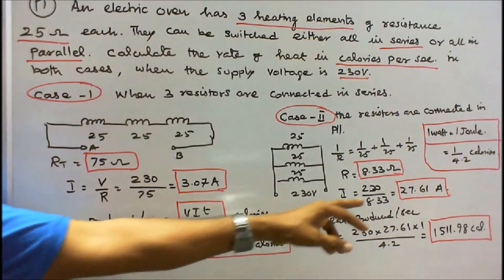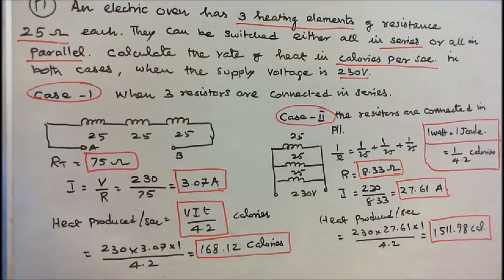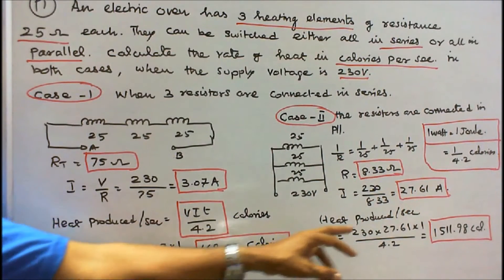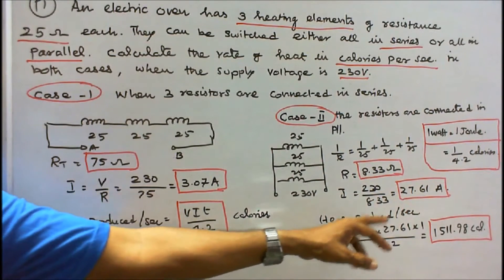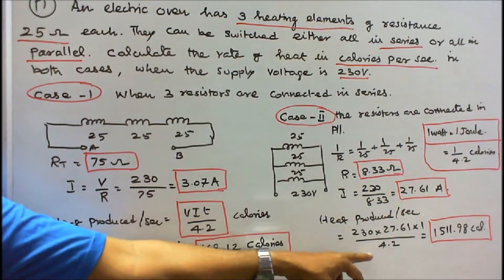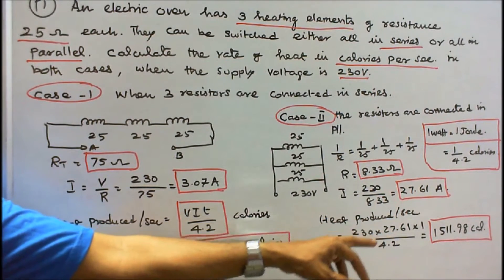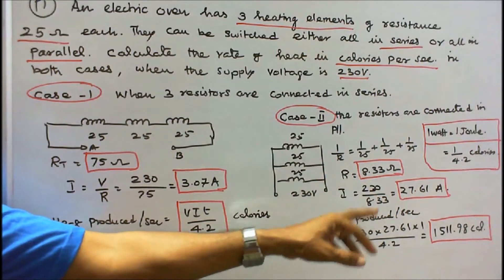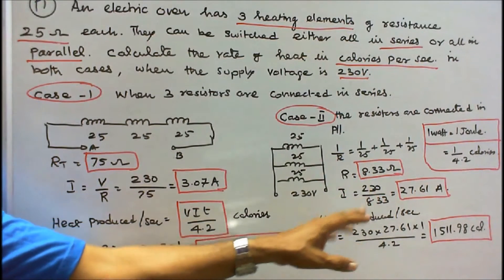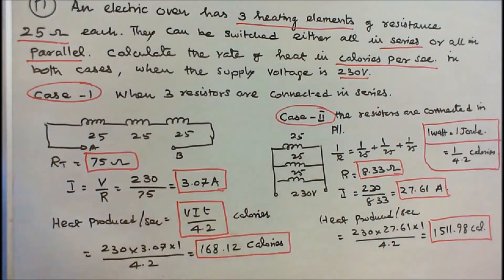Heat produced per second = 230 × 27.61 × 1 divided by 4.2 = 1511.98 calories.